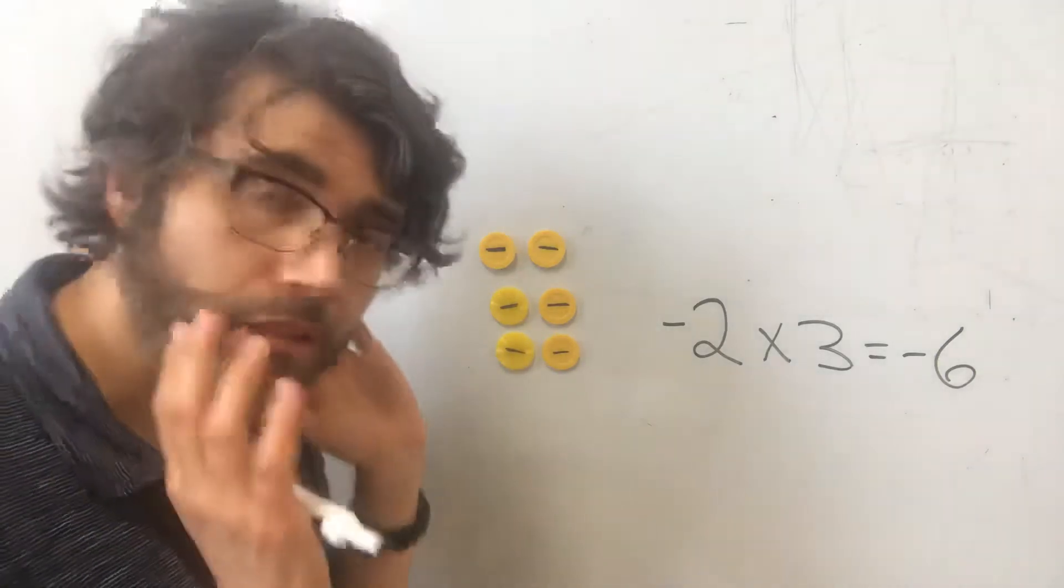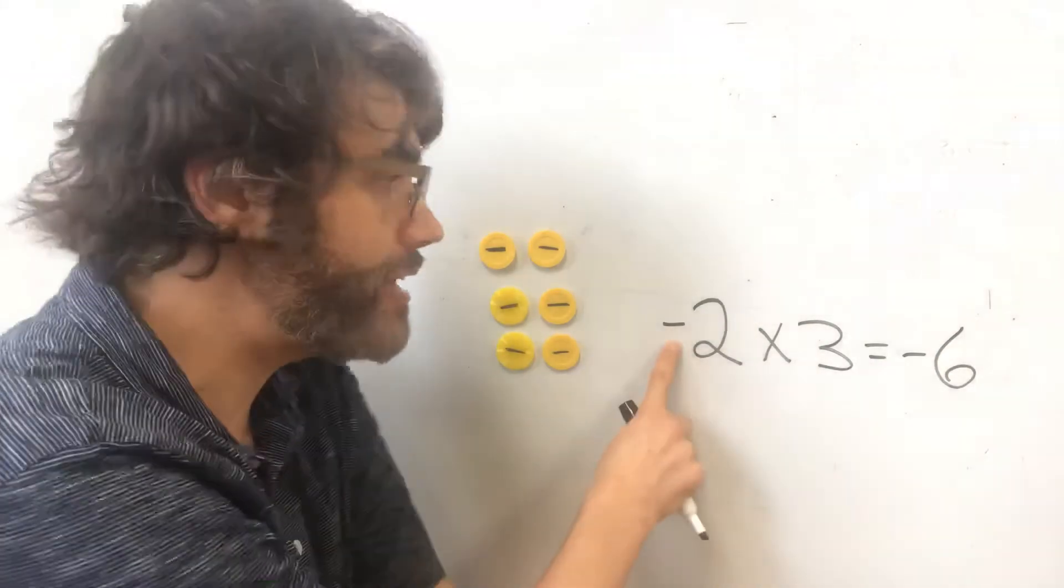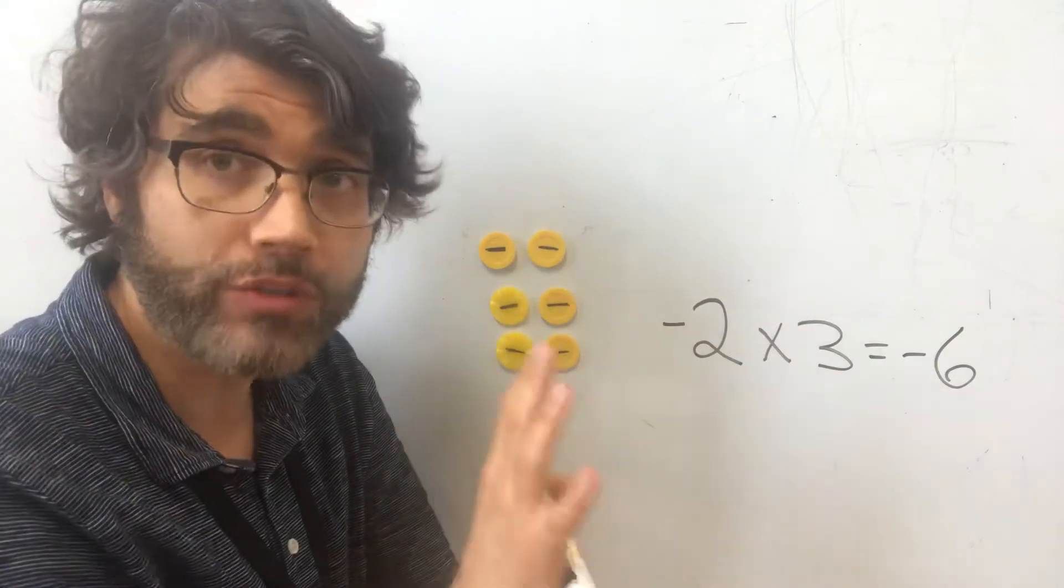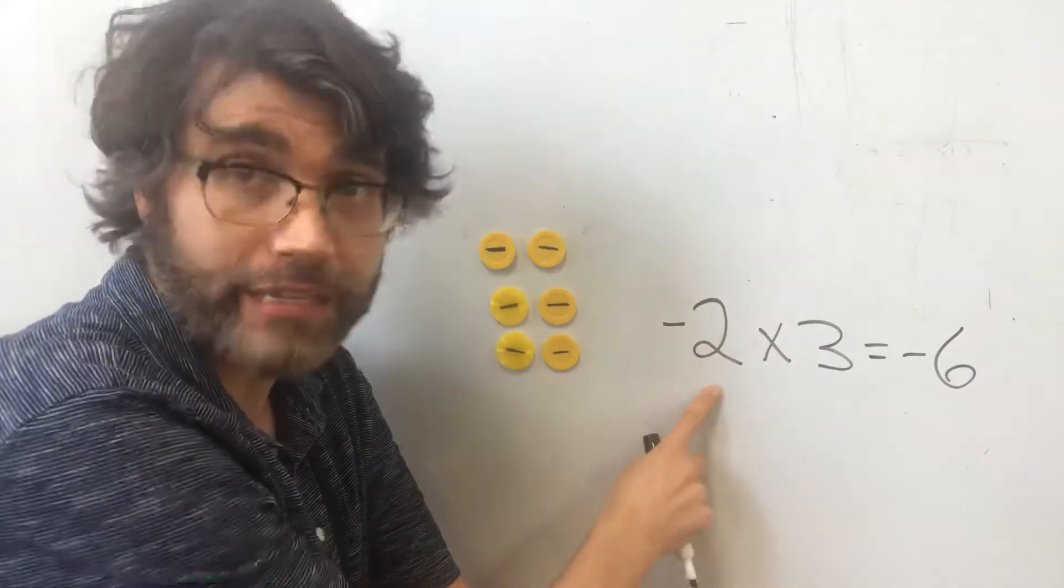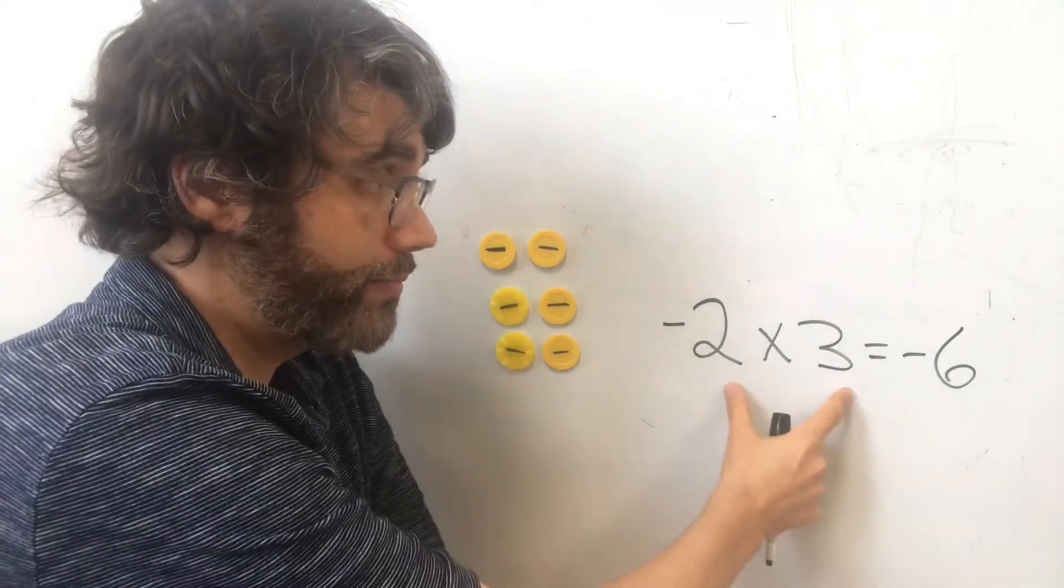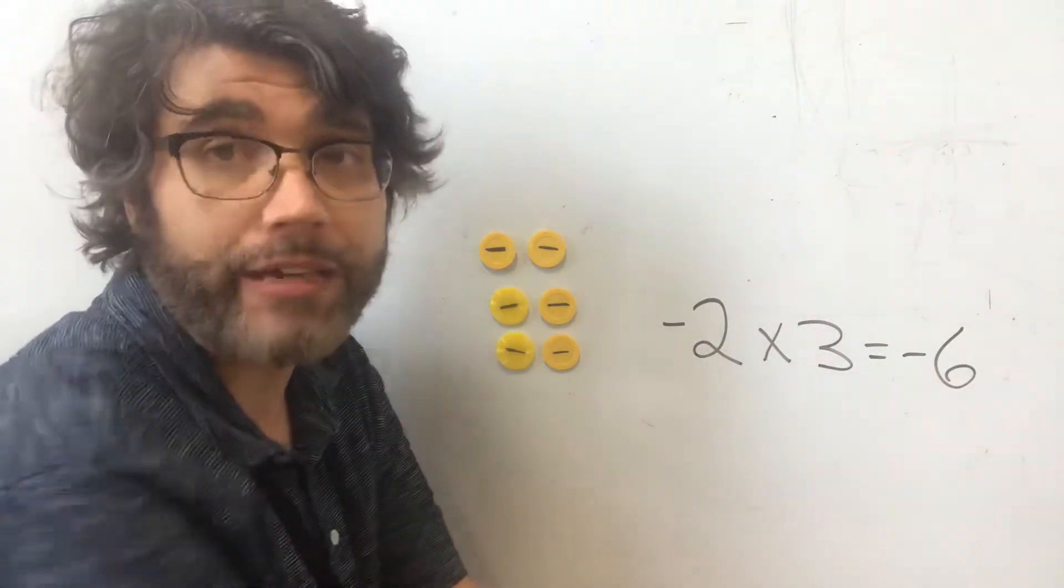Alright? So long story short, when you see a negative and only one negative, both of these are not negative. Only one is negative. So the rule is when there's one negative in a multiplication problem, then your product is going to be negative.